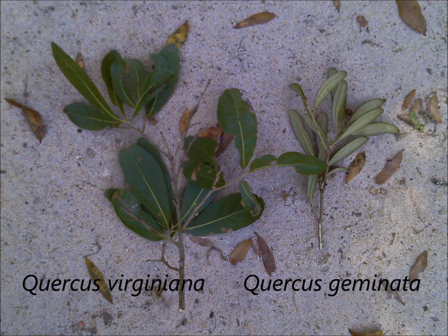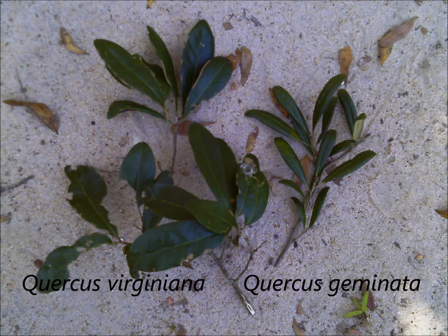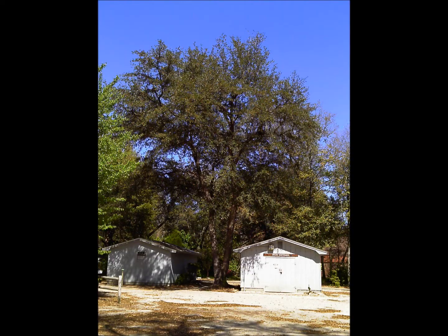The leaves of sand live oak are often much smaller than the leaves of the southern live oak. In more inland locations, the tree is often more upright and the branching is more vase-like.